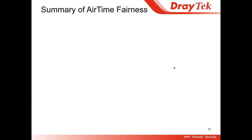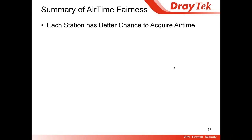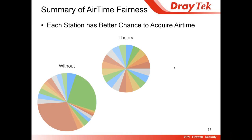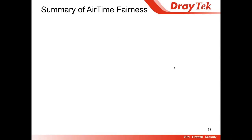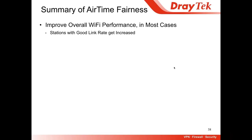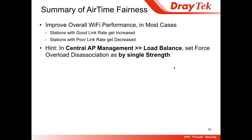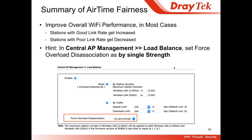Summary: First, after enabling airtime fairness, each station has a better chance to acquire airtime — we are getting closer to the theory where airtime was being dominated by some stations. Second, it improves the overall Wi-Fi performance in most cases. Stations with good link rate got increased, and stations with poor link rate got decreased. As a hint, in the central AP management load balance, we can set force overload dissociation by signal strength to keep stations finding APs with good link rate, and thus avoid the case where stations with poor link rate get decreased.